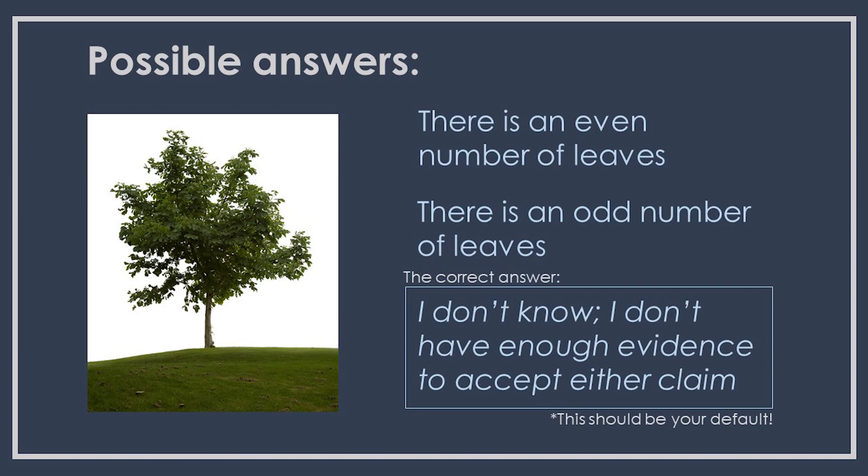Let me give you another example. What if I make a claim about the world — I assert that something is true — and your job is to determine whether or not you believe me? I have a tree in my yard, and I take really good care of it. I tell you one day that my tree has an even number of leaves on it. I'm showing you a picture of the tree and telling you there's an even number of leaves. Do you have reason to believe that's true? Well, there are only two possibilities: either there is an even number of leaves, or there's an odd number. It can't be anything other than even or odd — so either I'm right or I'm wrong.